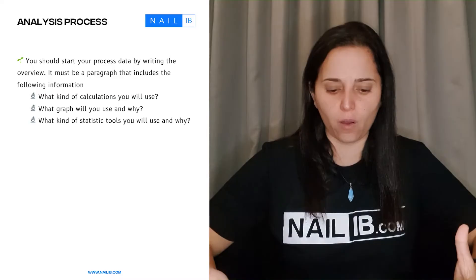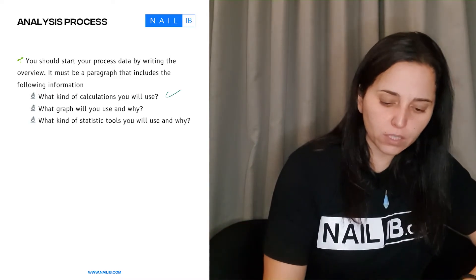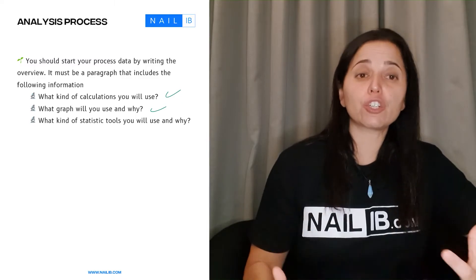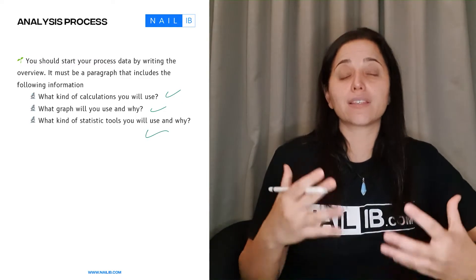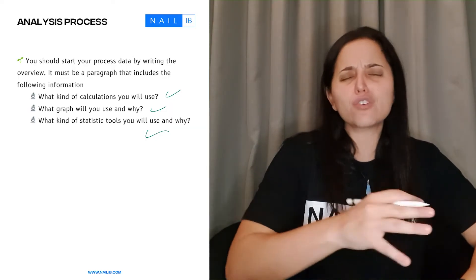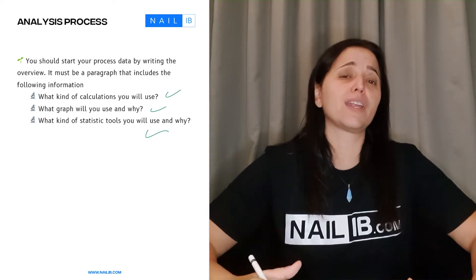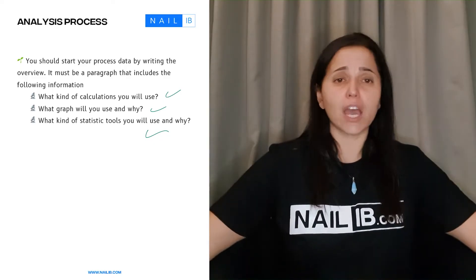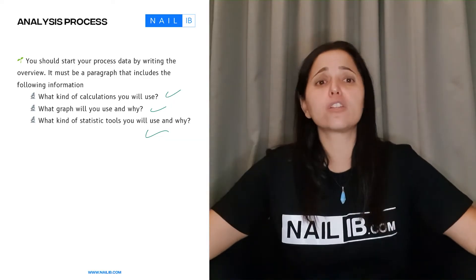And that can get you some points because you're giving some explanations of the reasons why you're using those calculations. So what kind of calculations you're going to be using, why are you choosing a certain graph, what is the point of that graph that you're using, and of course what kind of statistical tools are you going to use. These are three things that you mentioned in an overview. Overview should be about four maximum five sentences where you're just explaining, hey, introduction, I'm going to be using average and standard deviation, I'm going to use line graph because I want to see according to time.